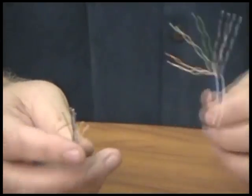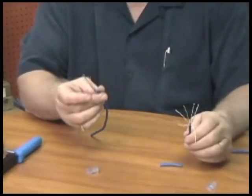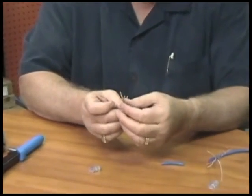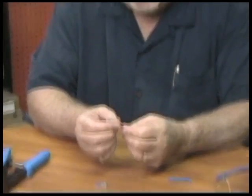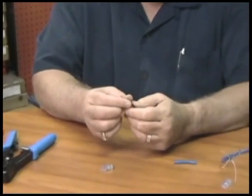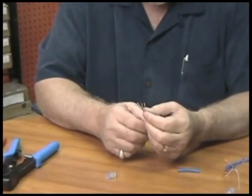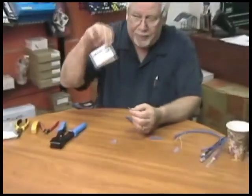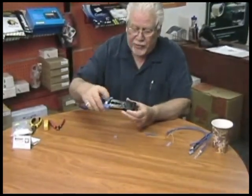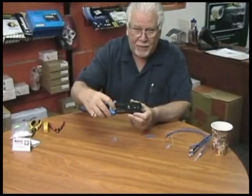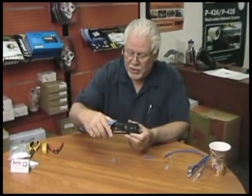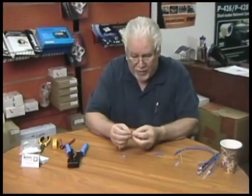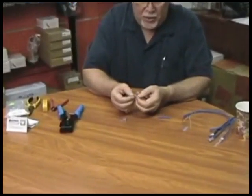So this is what we started with and this is what you want to wind up with before you install the connector. Now the next thing you want to do is, in most cases, you want to use what's called the T568B wiring diagram and it comes with the tool in the form of a little pamphlet. It's also engraved in the tool, both the A and the B wiring charts.